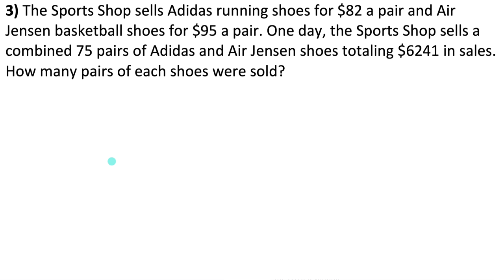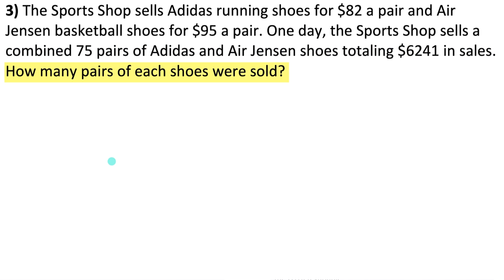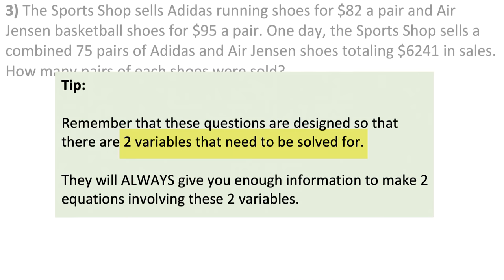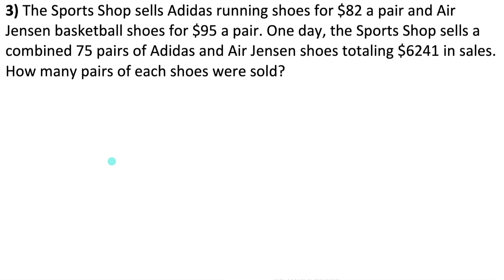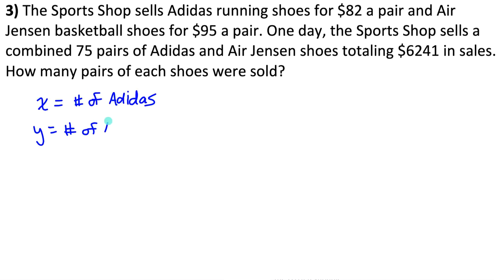Example 3 is an application of solving linear systems. A sport shop sells Adidas shoes for $82 a pair and Air Jensen basketball shoes for $95 a pair. One day the shop sells a combined 75 pairs of shoes totaling $6,241 in sales. How many pairs of each shoe were sold? For these types of questions, you need to solve for two variables by making two equations. Let x = number of Adidas and y = number of Air Jensen sold.